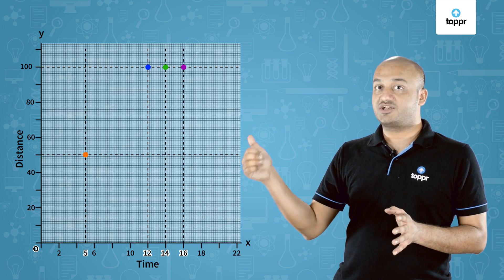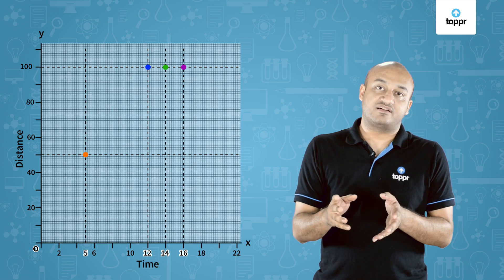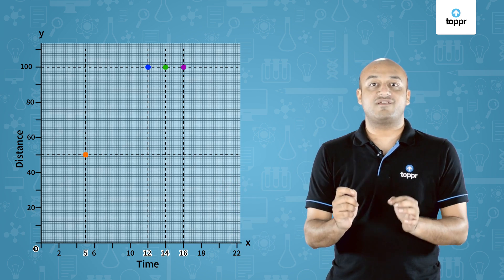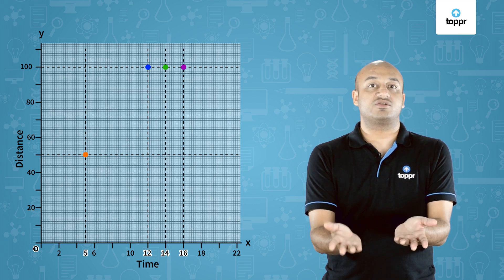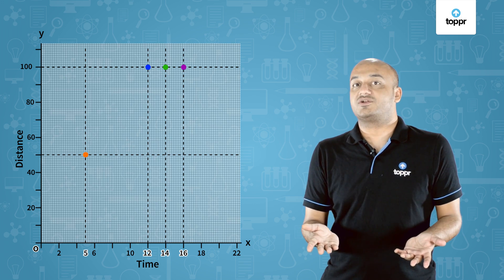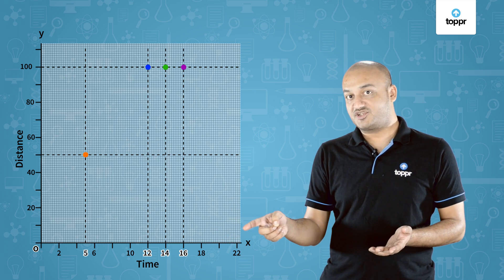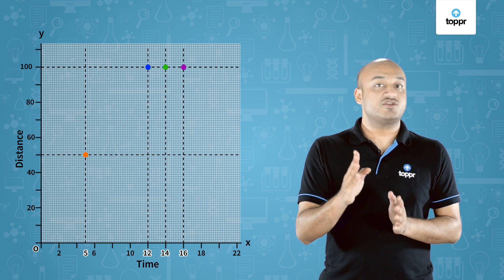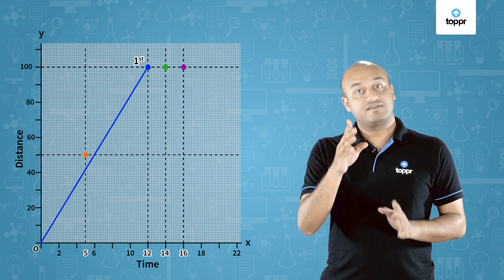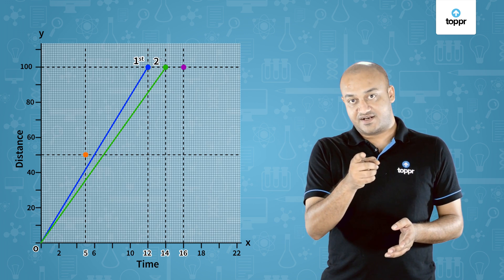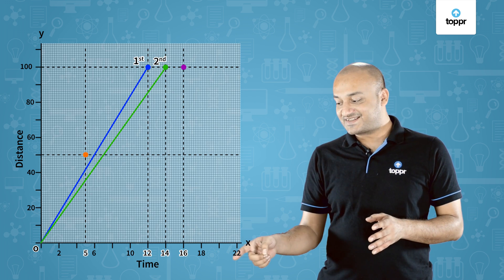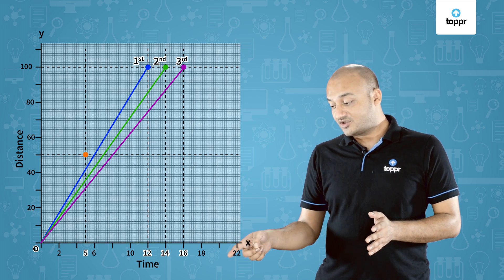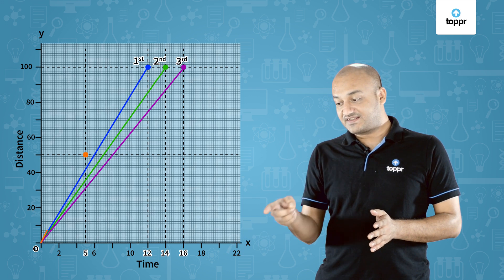Now let's draw these four lines from the origin. For all four runners, we draw their individual graphs using the starting point and end point. All four runners started from the origin: s = 0 and t = 0. The first runner finished 100 meters in 12 seconds. The second runner finished in 14 seconds. The third runner took 16 seconds. The fourth runner only ran halfway and fell down — he ran only for five seconds.